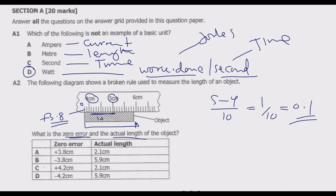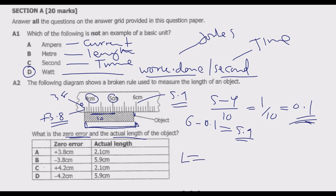To find the actual measurement: the end reading is 0.1 below 6, so it is 5.9. The actual length equals the end reading minus the start reading: 5.9 minus 3.8 equals 2.1 centimeters. So the zero error is 3.8 and the true reading is 2.1 centimeters. Answer A is correct.